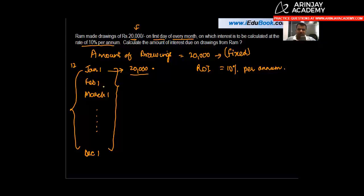If I've withdrawn 20,000 on January 1 and the year ends on December 31, what is the period for which I'm using this money? I'm using it from January 1 until December 31, or in other words, we can say we are using it for 12 months.